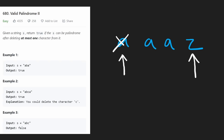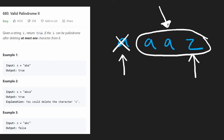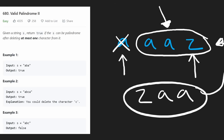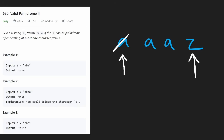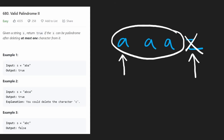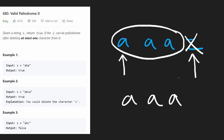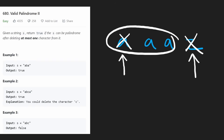We can first consider: possibly this character can be removed, and then is the rest of it a palindrome? When we have the rest of the characters, we don't have to do anything fancy because we already used up our removal — all we have to check is whether this remaining string is a palindrome. In terms of code, we can take this string, reverse it, and check if it equals the original. If it's not equal, then we only have one option left: remove the other character and check if the remainder is a palindrome by taking its reversal. If that equals the original, then we found a palindrome and can return true. If not, we return false.